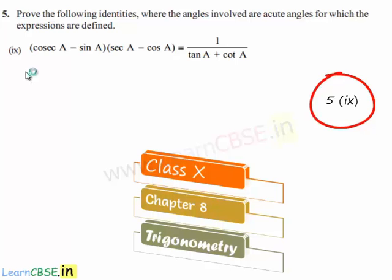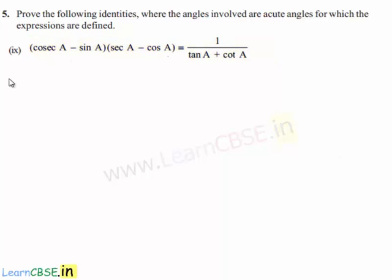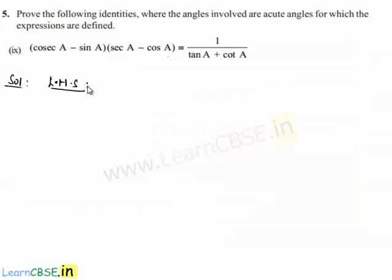Moving on to the 9th bit of the 5th problem, we are asked to prove that (cosec a - sin a)(sec a - cos a) = 1 / (tan a + cot a). In order to prove this, let us initially consider the left hand side, that is (cosec a - sin a)(sec a - cos a).